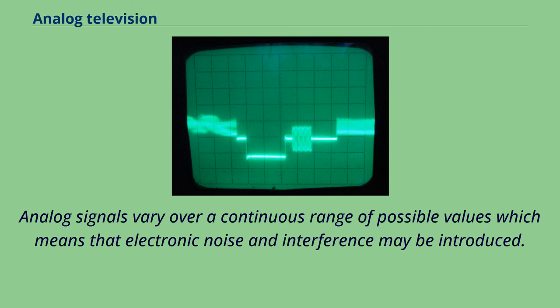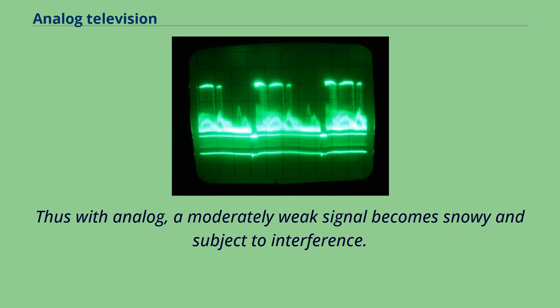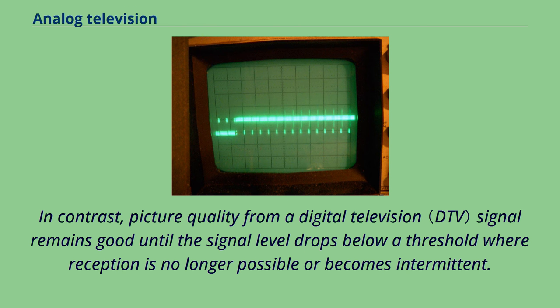Analog signals vary over a continuous range of possible values which means that electronic noise and interference may be introduced. Thus with analog, a moderately weak signal becomes snowy and subject to interference. In contrast, picture quality from a digital television signal remains good until the signal level drops below a threshold where reception is no longer possible or becomes intermittent.